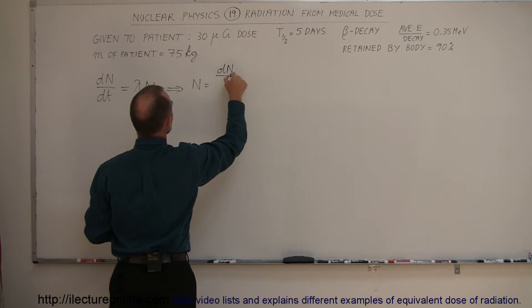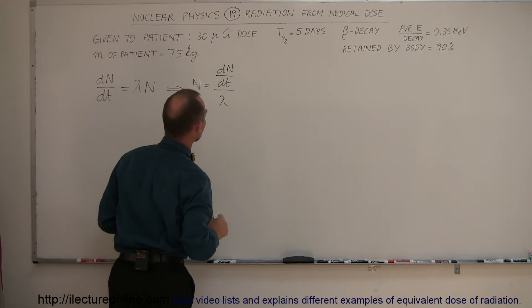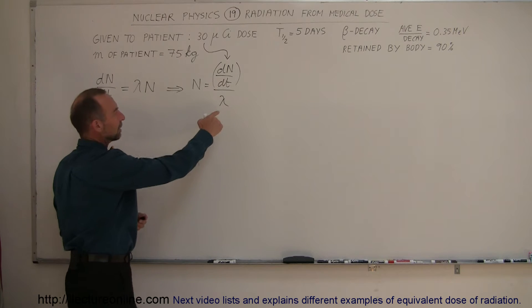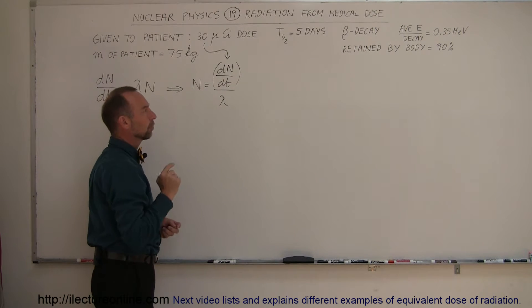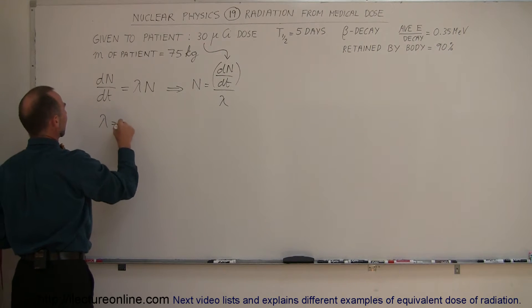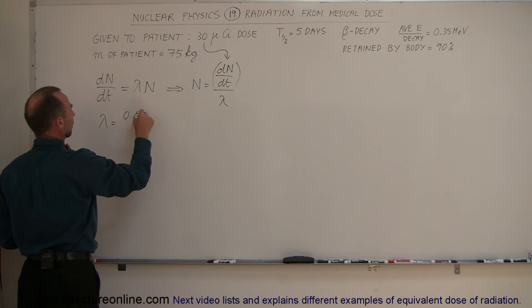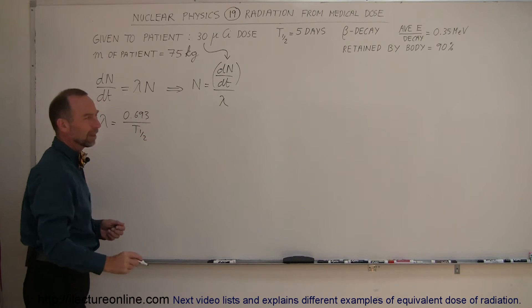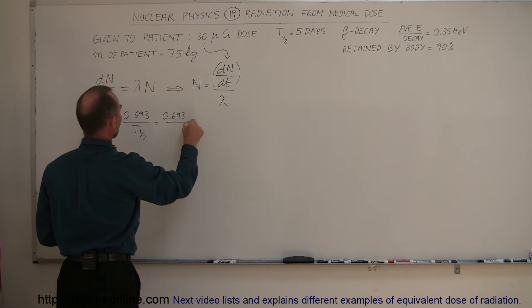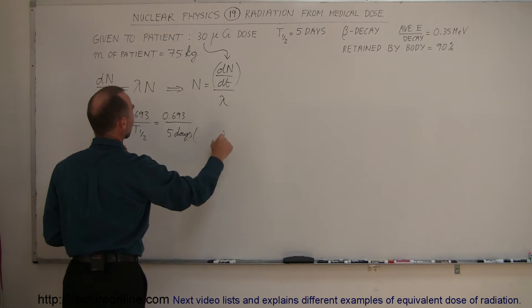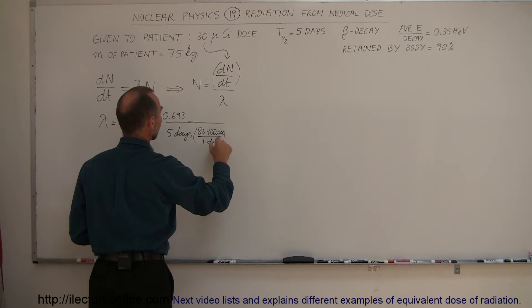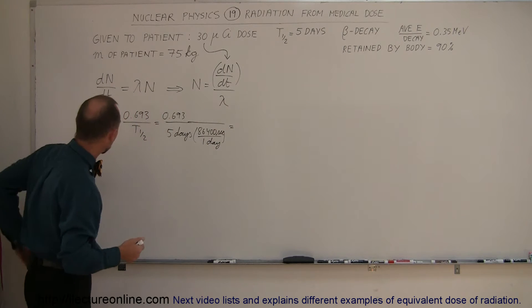So the dN/dt, the decay rate, is given and we can plug that in here. But we still need to figure out what the decay rate lambda is. To figure that out, we have to go back to our half-life, and then we realize that the decay rate lambda can be found by taking the number 0.693 divided by the half-life. Of course, we want to have the half-life in seconds, so this is equal to 0.693 divided by five days. Since in each day there are 86,400 seconds per day, we can convert that to seconds.